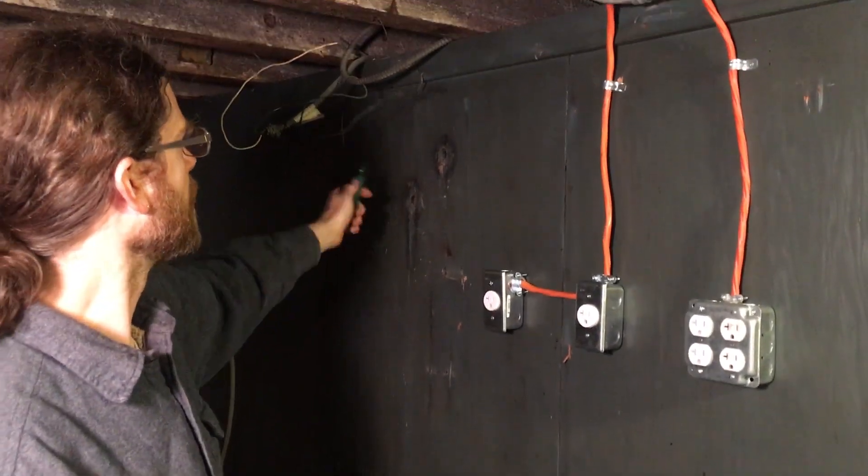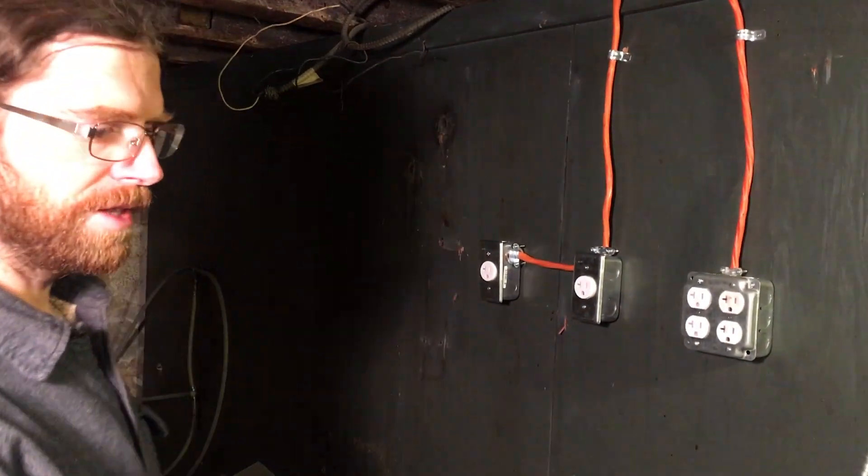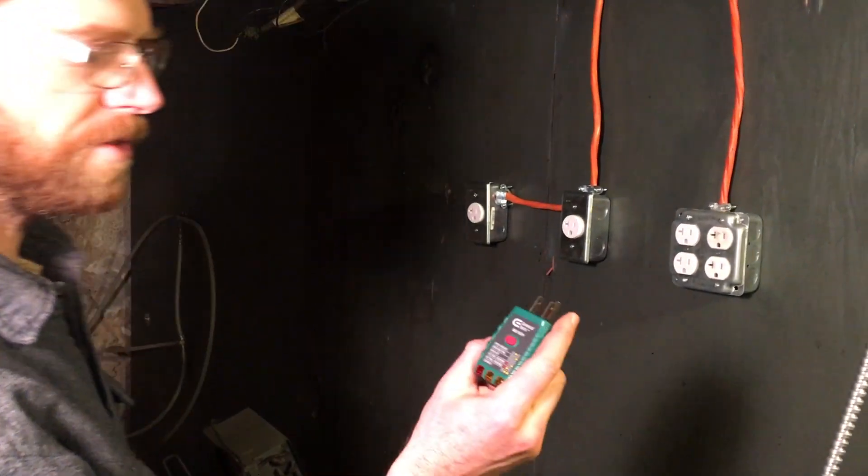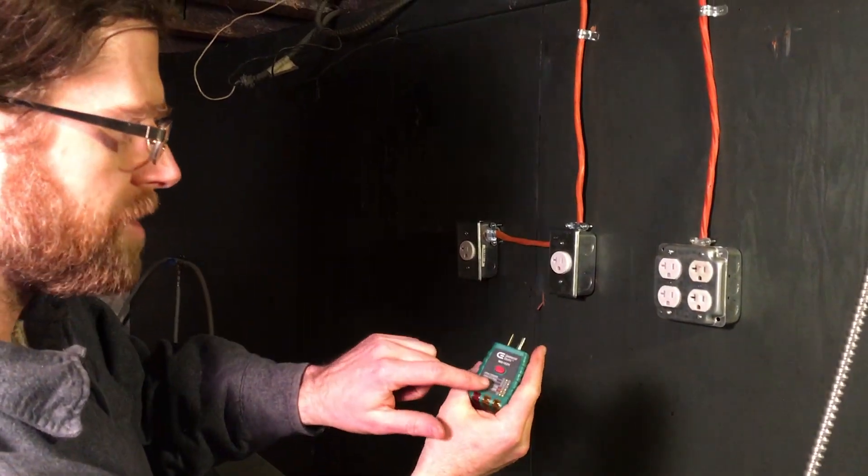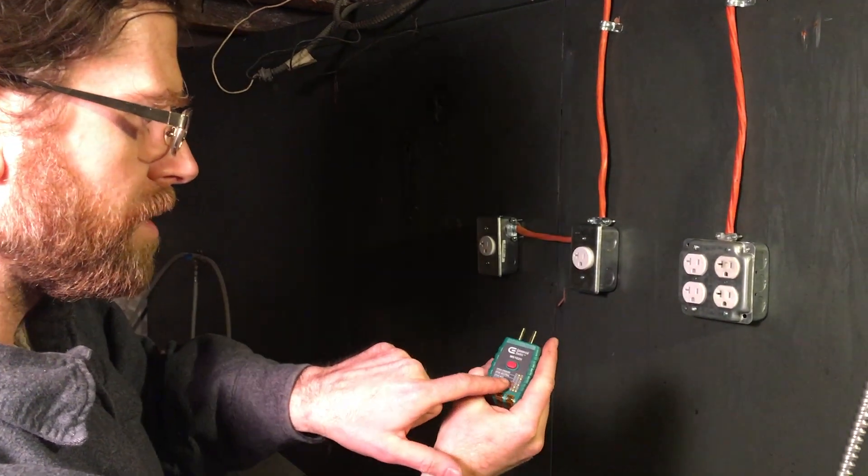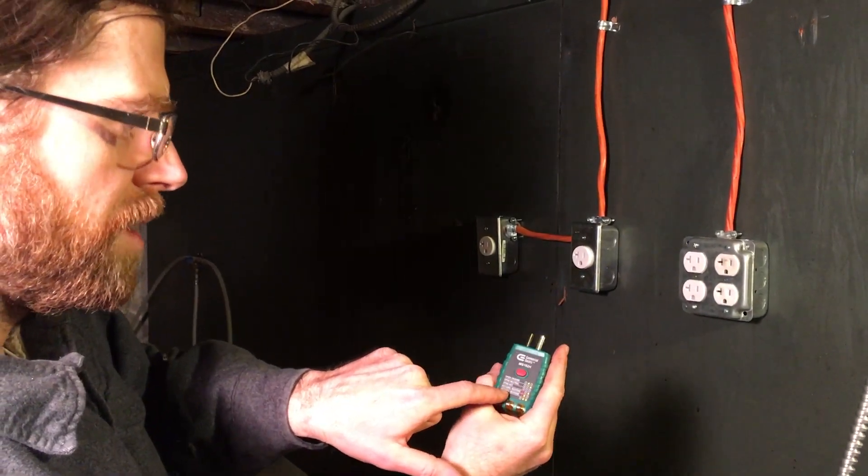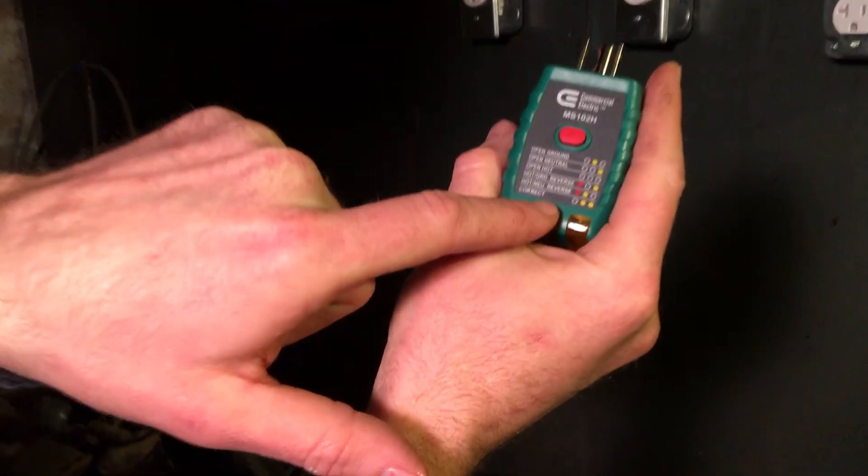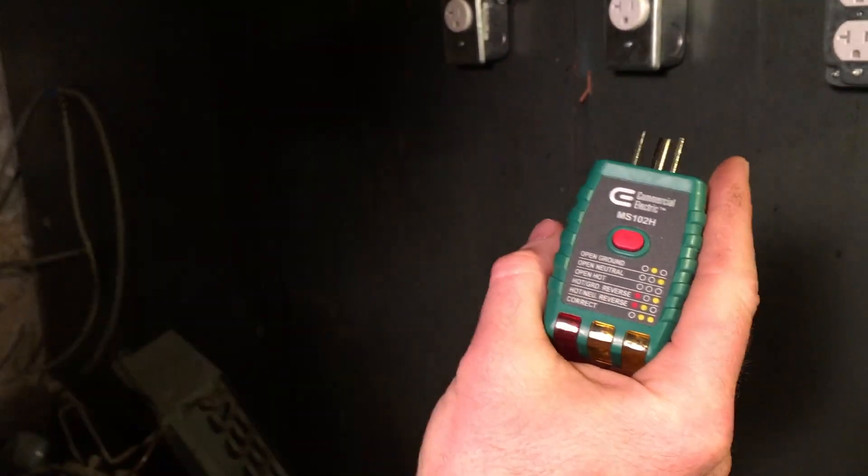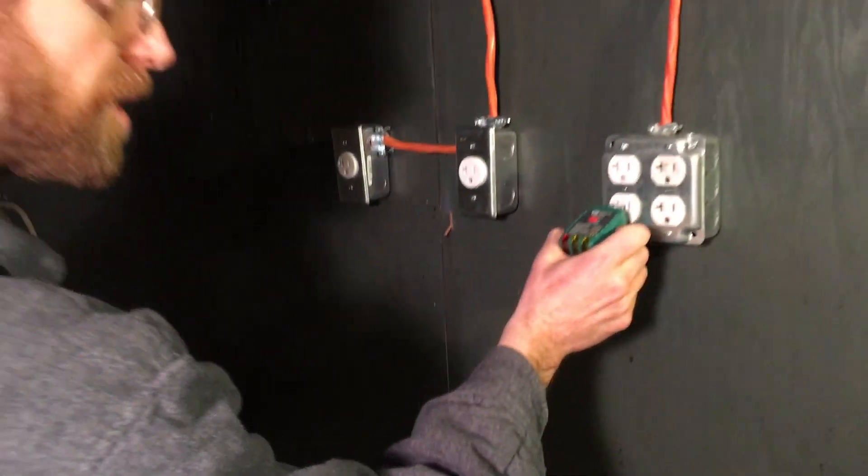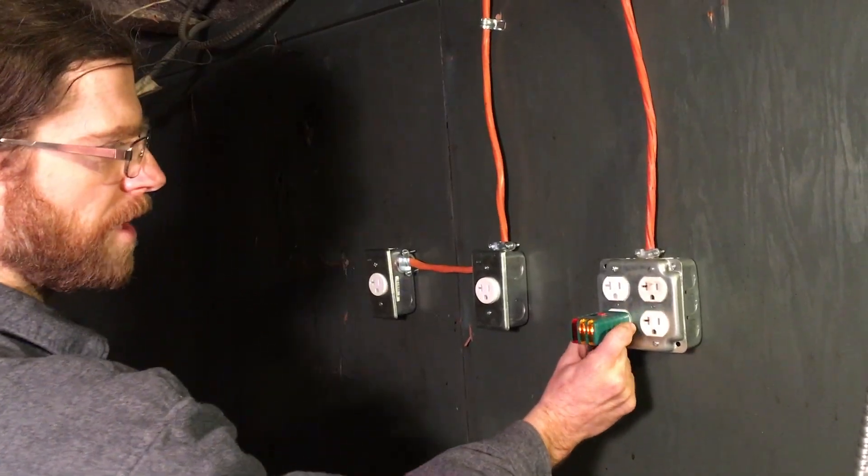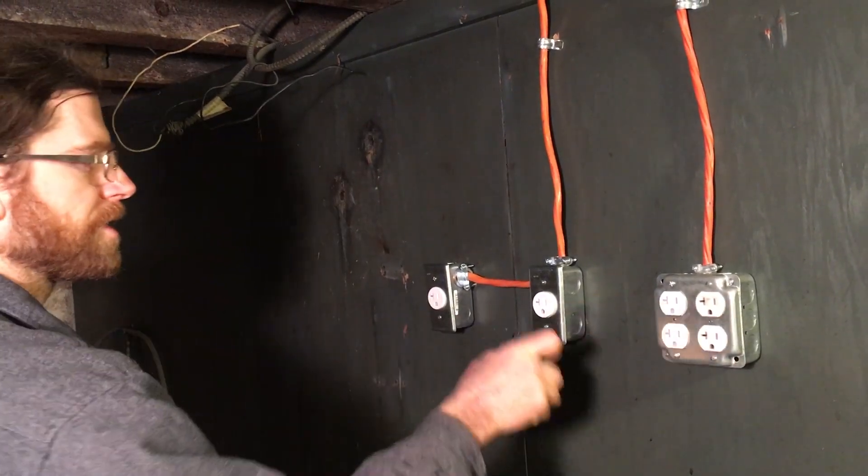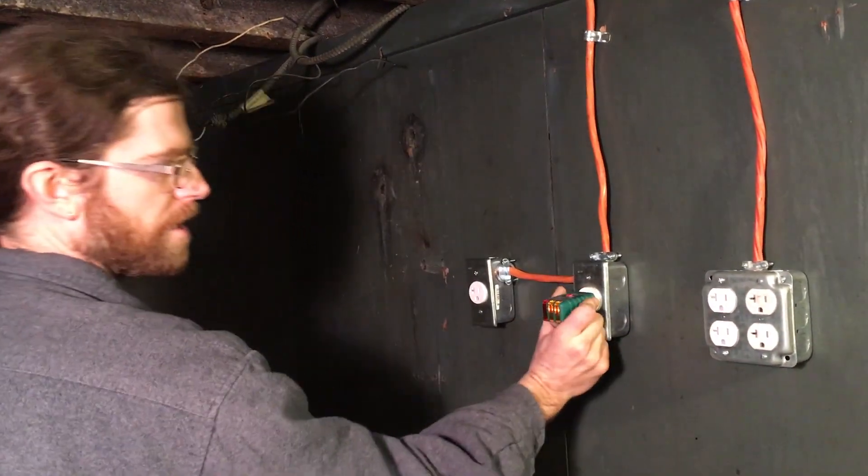This one obviously is dead. And then this checks your outlet to make sure you've wired it properly. It has all the different possible mistakes here and corrections to make. It'll tell you if you've wired it improperly. When you plug it in, two lights to the right means that you've wired it properly and it's all good to go. And check there. And check there.